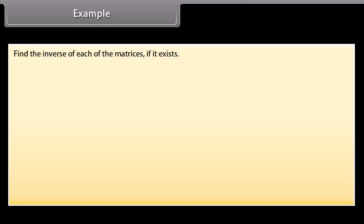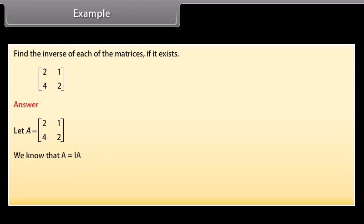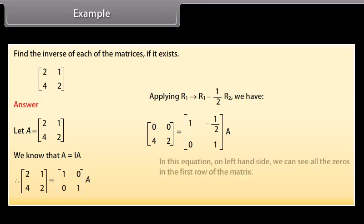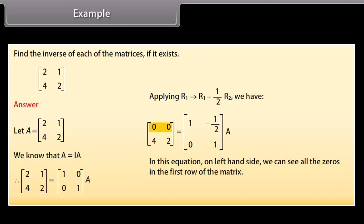Example. Find the inverse of the matrix with first row 2, 1 and second row 4, 2. Let the given matrix be A. Writing A next to I and applying R1 → R1 − (1/2)R2, we get a first row of all zeros. Since all elements of the first row are zero, A inverse does not exist.